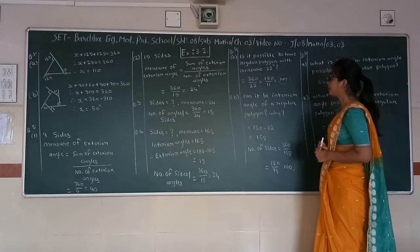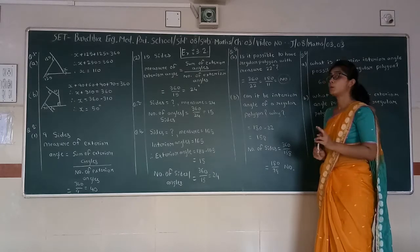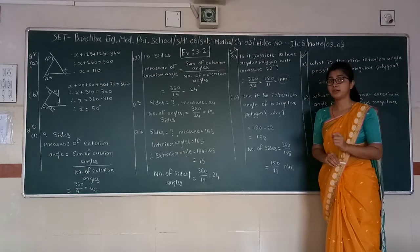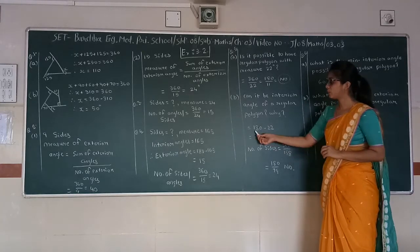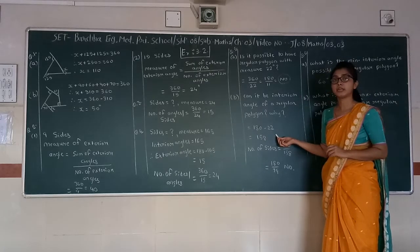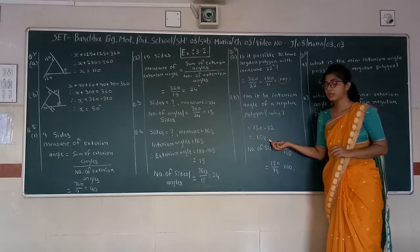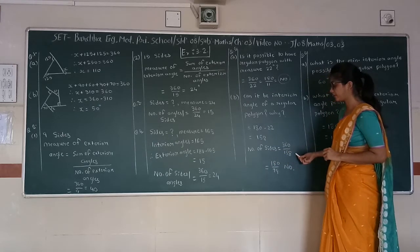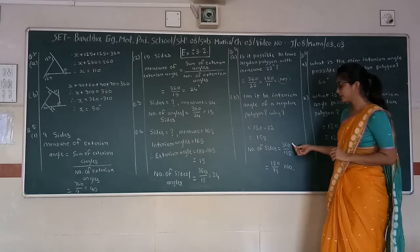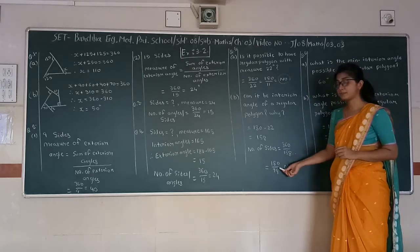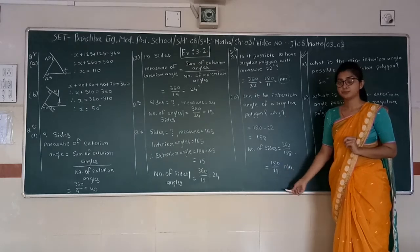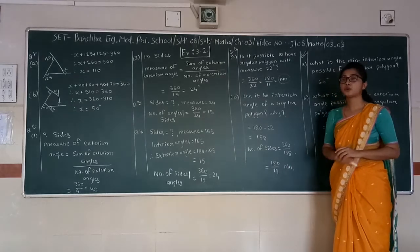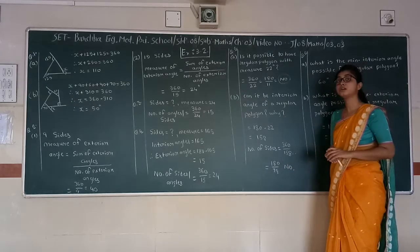Next part: Can 22 degrees be an interior angle of a regular polygon? For that, we calculate 180 minus 22, which gives 158. Then number of sides equals 360 divided by 158. Both numbers are divisible by 2, giving 180 and 79. Since this is not a whole number, the answer is again no.